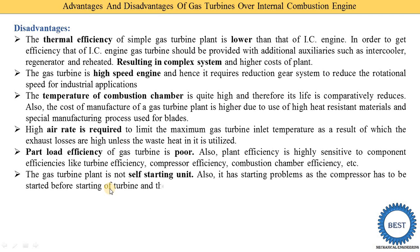The gas turbine plant is not a self-starting unit. Unlike an IC engine, which can be started by kick, handle, or electric motor, the gas turbine has a starting problem because the compressor must be started before the turbine. An external source — such as a diesel engine or electric motor — is required to start the compressor. Once the turbine runs and produces power, it drives the compressor and the external source is disengaged.